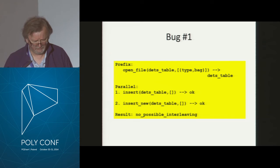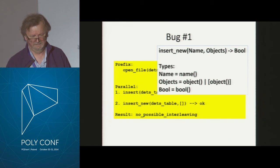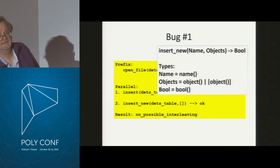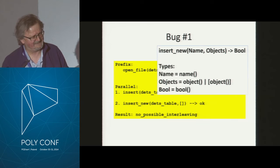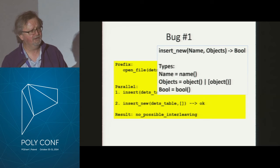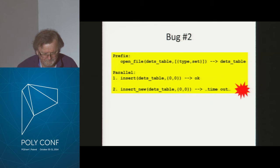How is that possible? Sometimes there's no alternative — you just have to read the manual. The manual says the return type of insert_new is bool. Even in Erlang, a bool is either true or false — it's not 'okay'. I had run tens of thousands of sequential tests and it returned true or false every single time. I ran a parallel test and suddenly it returned 'okay'. Where did that come from?